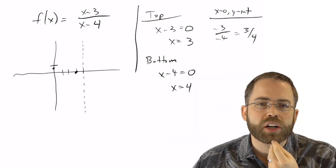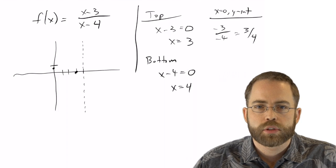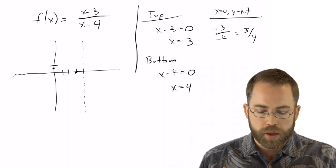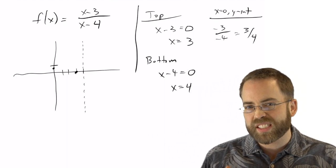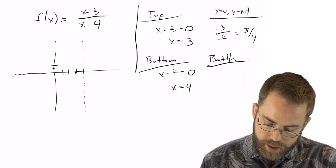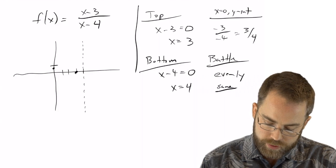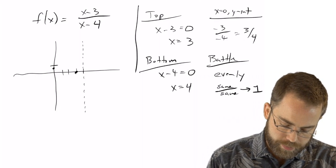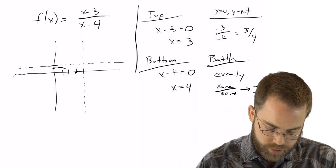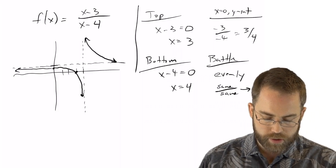We've got plain x on top and plain x on bottom — no x-squareds or x-cubes. The exponents are evenly matched. So in the long run, nobody's going to win. When I get to a billion minus 3 over a billion minus 4, they're essentially the same, so this thing is heading towards one. In the battle of top versus bottom, they are evenly matched, heading towards the same thing, which gives a horizontal asymptote at one. The graph creeps up towards that asymptote on both sides of the vertical asymptote at four.